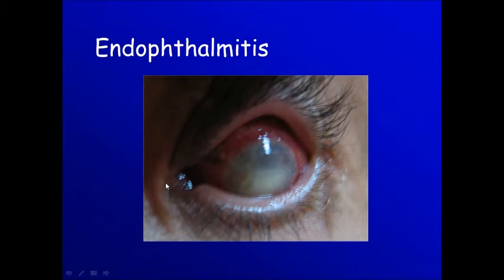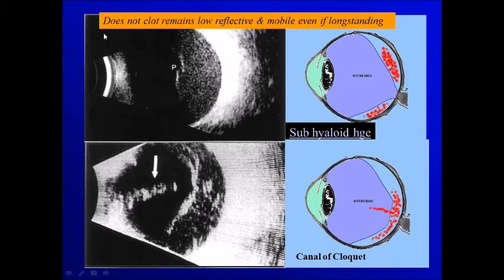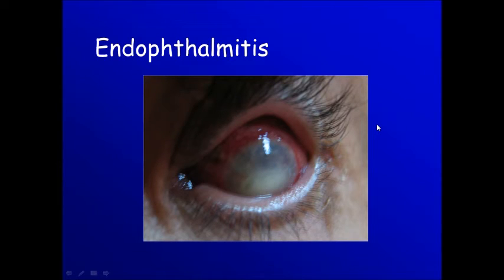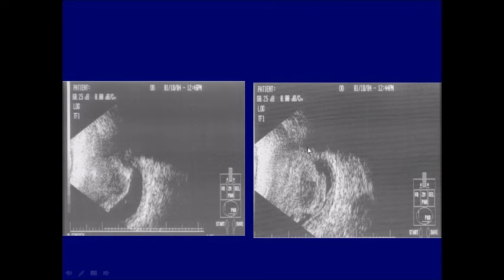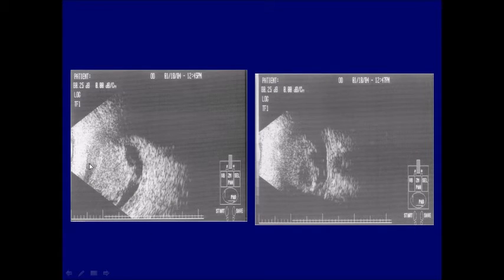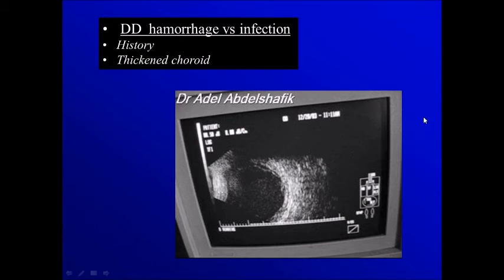Here the hemorrhage finds its way into the canal of Cloquet. The character of the subhyaloid hemorrhage is that it does not clot — it remains of low reflectability and mobile even if it's long-standing, in contrast to hemorrhage inside the vitreous which clots and becomes hyperreflective. If the vitreous cavity is filled with cells, we get something similar to hemorrhage, but the difference is the history. If we see the choroid is thickened, this helps us differentiate between hemorrhage and cells — if there is infection, we expect the choroid to be thicker. Together with the history, this will help differentiate dots due to hemorrhage from dots due to infection.